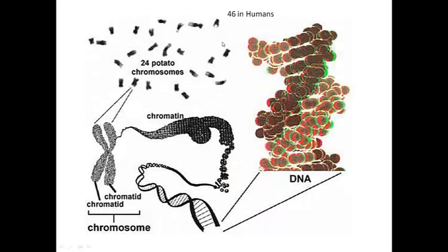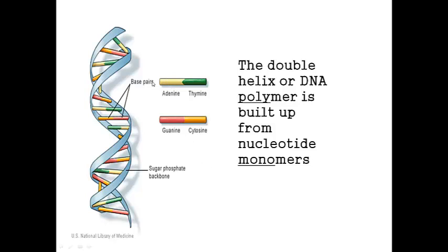Here's the potato chromosomes. 24 chromosomes in each potato cell. Just another picture of the highly coiled DNA that makes a chromosome. Another look at our double helix in more detail. Here's the sugar phosphate backbone and the bases that form the rungs of the ladder.